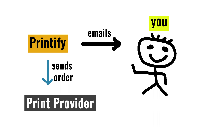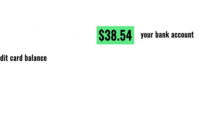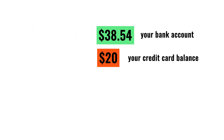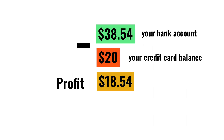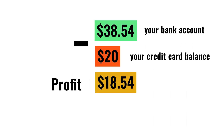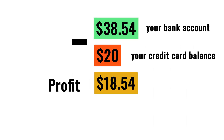Printify can't get the funds directly from your online store because there are two separate transactions here. All in all, you have $38.54 in your bank account and you have to spend about $20 to pay off the credit card that Printify just charged you. So in the end, you'll make a profit of about $18.54 from selling this t-shirt.